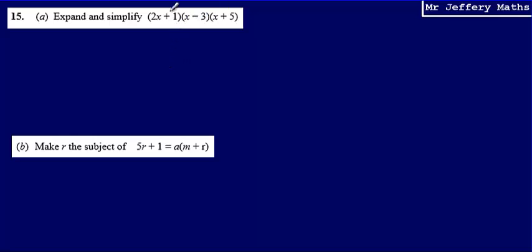And whenever we multiply three quantities, if we think about numbers, we start by multiplying the first two first, and then we take our answer to that and multiply it by the third. And it's no different with algebra either. So what we're going to deal with here to begin with is we're going to start by multiplying (2x + 1) by (x - 3).